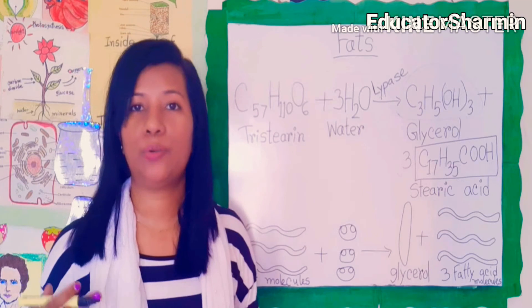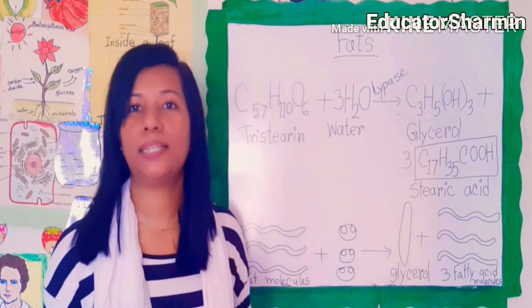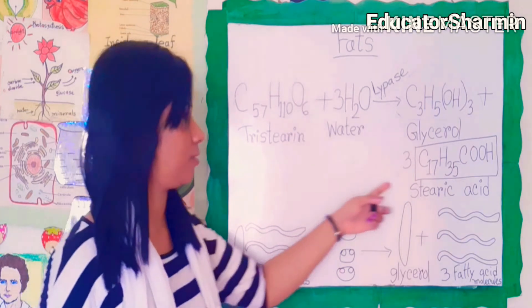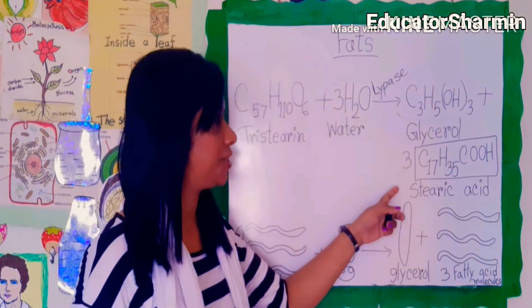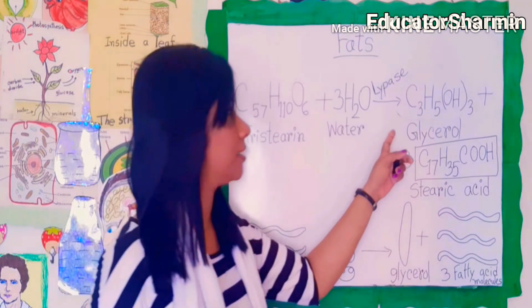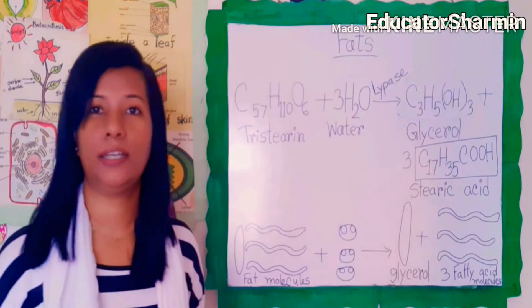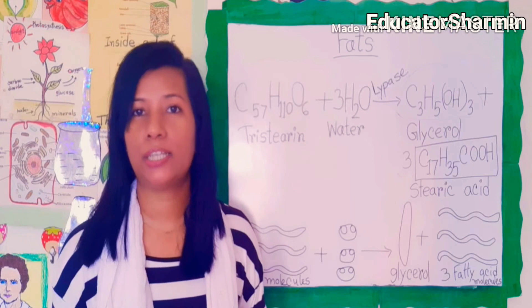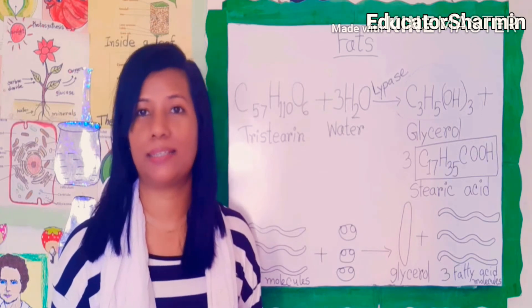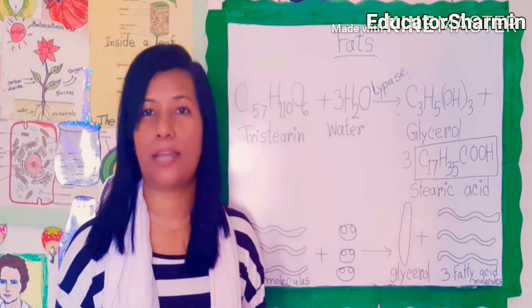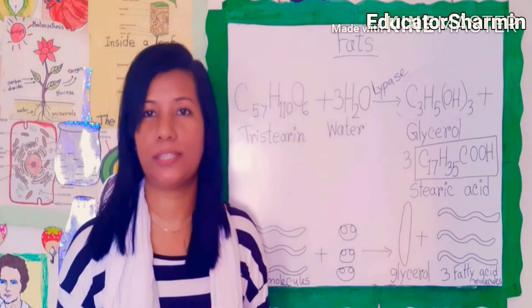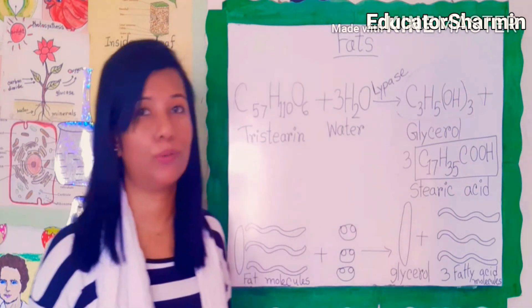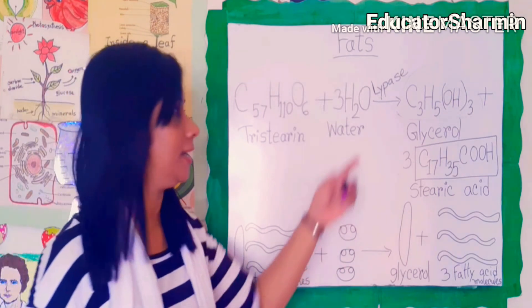This equation represents the splitting of fats into fatty acids and glycerol - stearic acid and glycerol. This splitting involves the addition of water molecules, which is hydrolysis, and occurs readily in the presence of an enzyme or catalyst. What's the enzyme?